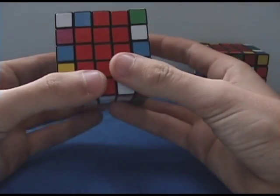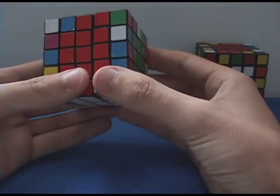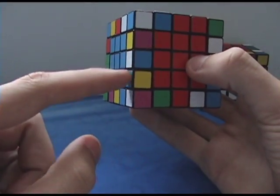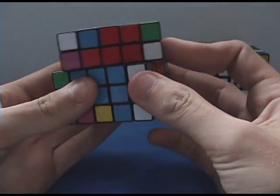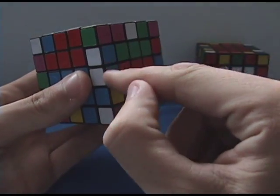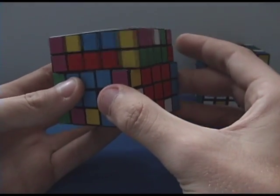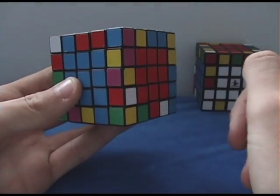Okay, so the basic premise behind this method is that we're trying to just find two pieces that match, like this blue and white and this blue and white. We're going to break the centers to make a pair, then we're going to ditch that pair on the top or the bottom and restore our centers.